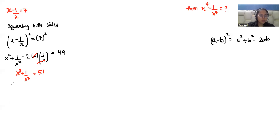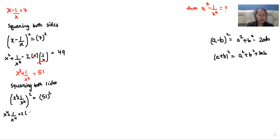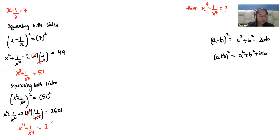Now again I am squaring both sides. So x square plus 1 over x square, whole square, is equal to 51 square. Here I am using the identity a plus b whole square, that is a square plus b square plus 2ab. So x power 4 plus 1 over x power 4 plus 2 times of x square times 1 over x square is equal to 51 square, which is 2601. Now again I can eliminate this, and taking plus 2 to the other side, x power 4 plus 1 over x power 4 is equal to 2599.